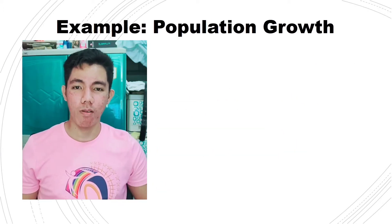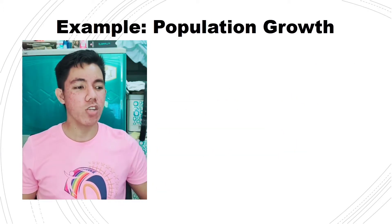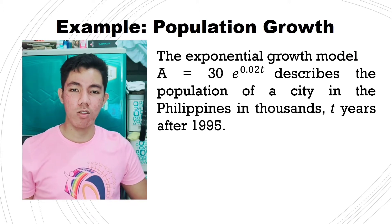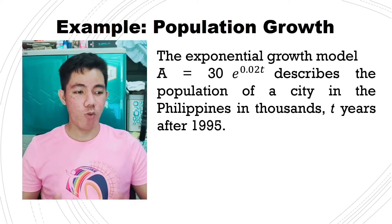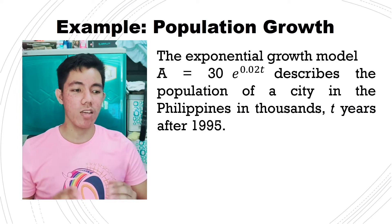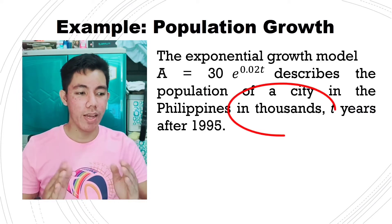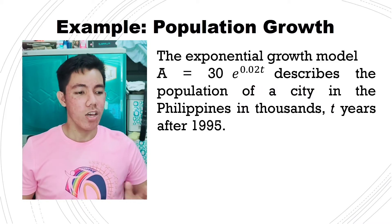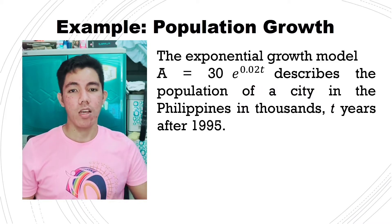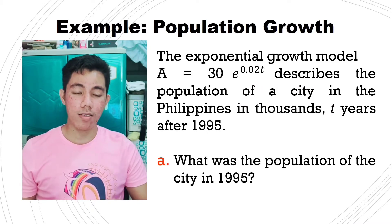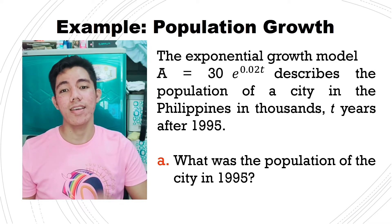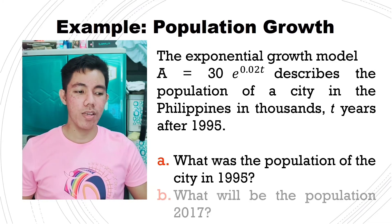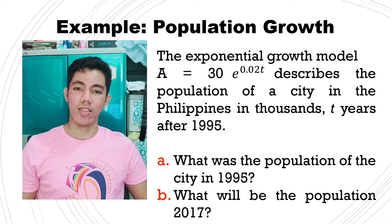Now let's have an example. The exponential growth model A equals to 30e raised to 0.02t describes the population of a city in the Philippines in thousands, where t is years after 1995. The questions are: what was the population of the city in 1995, and what will be the population in 2017?